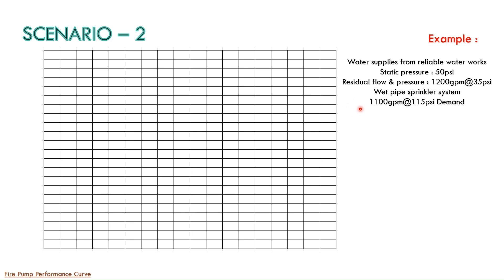And the system demand requirement is 1100 GPM at 115 PSI. So we need to choose the correct fire pump. There are two options.